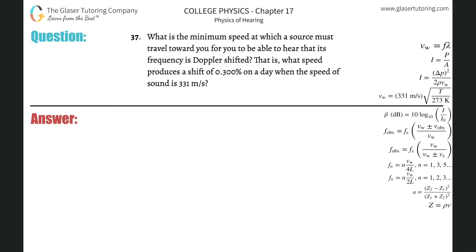Number 37: What is the minimum speed at which a source must travel toward you for you to be able to hear that its frequency is Doppler shifted? That is, what speed produces a shift of 0.3 percent on a day when the speed of sound is 331 meters per second?